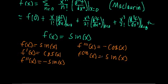So the higher derivatives carry on in a nice pattern. The fifth derivative will be cosine, the sixth will be negative sine, the seventh will be negative cosine, and so on — it repeats really nicely. Now that we have all these derivative terms, let's plug them into our expansion and evaluate them at x equals zero.